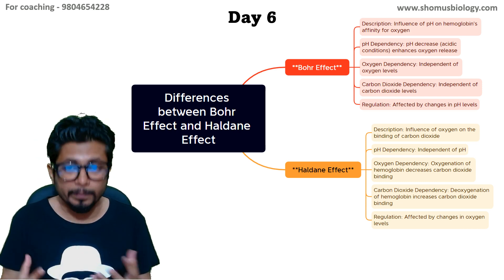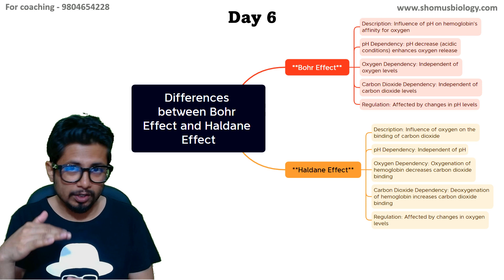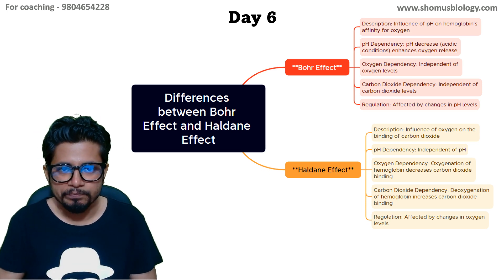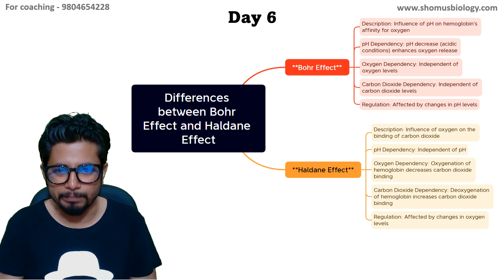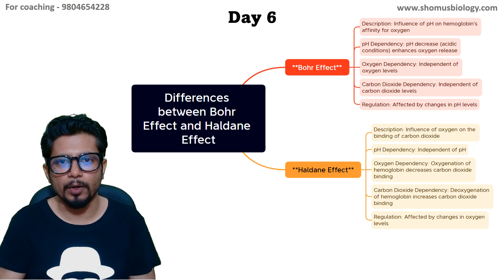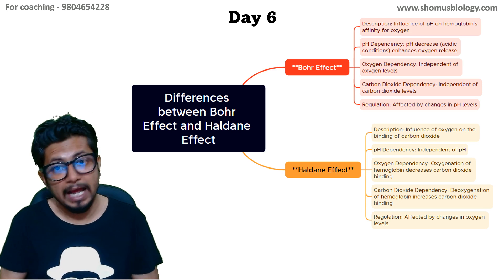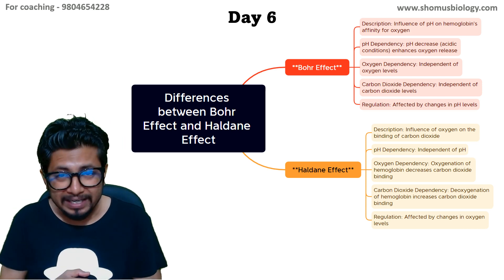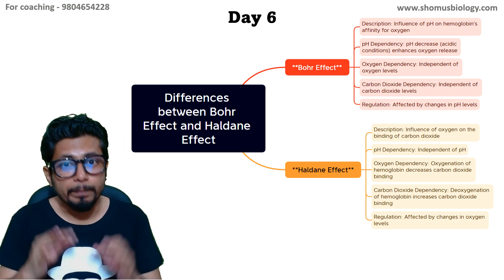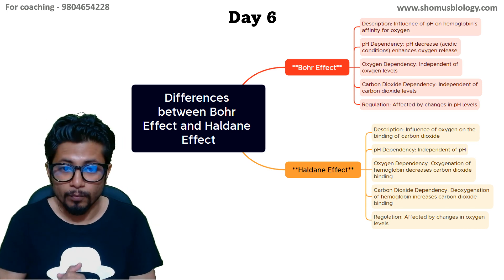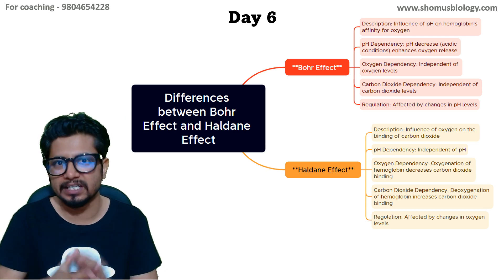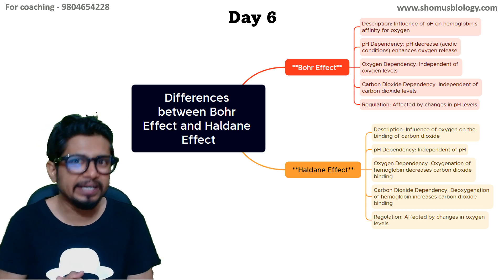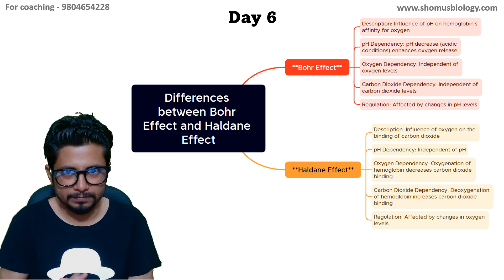It's very important to understand that somatic cells have less oxygen and lung cells have more oxygen. That is the simple idea about the Haldane effect and the Bohr effect. The Bohr effect only depends on pH, while the Haldane effect depends on oxygen concentration — that is the primary difference.